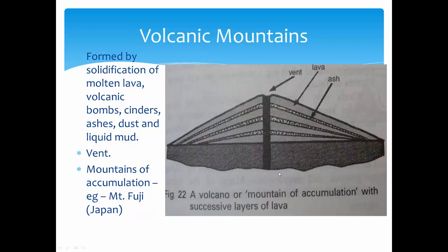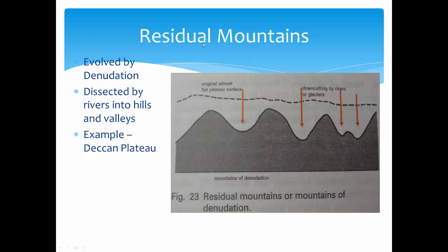Another type is volcanic mountains, formed by solidification of molten lava. The lava comes through a vent and solidifies, containing lava, ash, dust, and liquid mud. One example is Mount Fuji of Japan. The Philippine Islands were also formed by volcanic activity — a question about this appeared in UPSC mains.